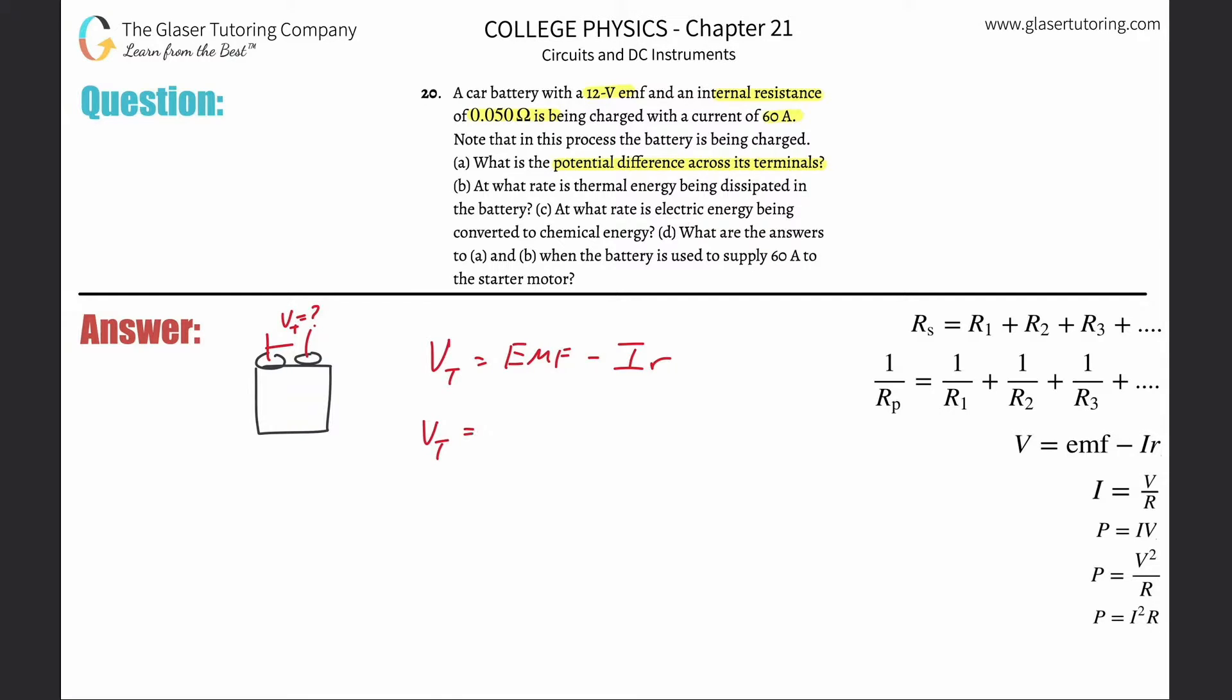So we know the EMF. They told us it's a 12 volt battery. Now minus, the thing is though, for a battery that's charging, this is going to become a positive. So this formula over here on the right-hand side, this is for when the battery is supplying some item with electrical energy. If the battery is being charged, just simply take that and turn it into a plus. It's as simple as that.